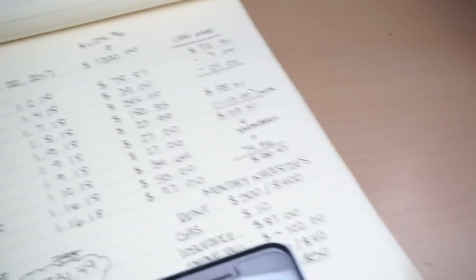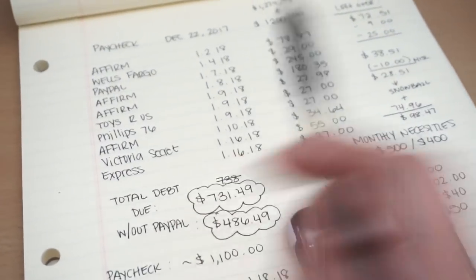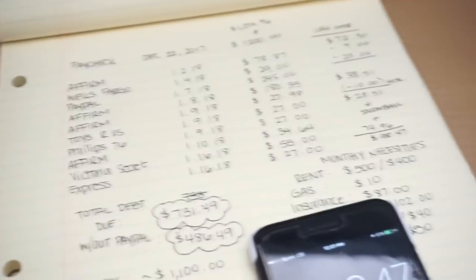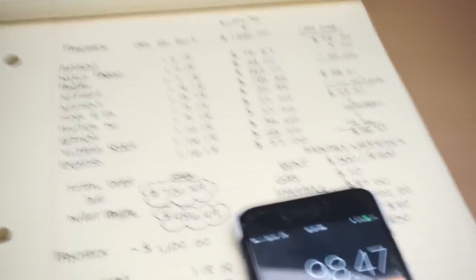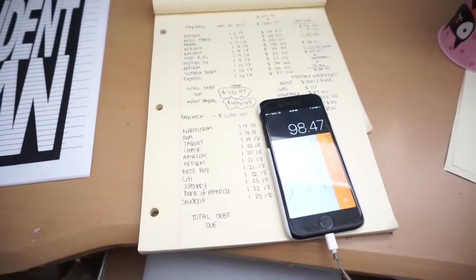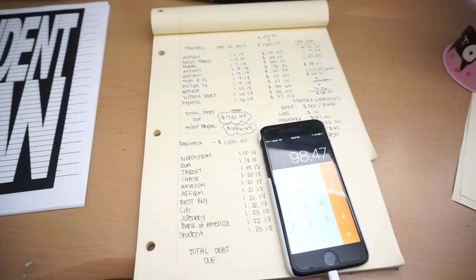Woo! That means I get to close one Affirm account and put like about $20 to my next smallest debt. So yeah, you guys, that is how I budget. Thanks for watching. I'll see you next time.